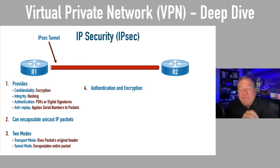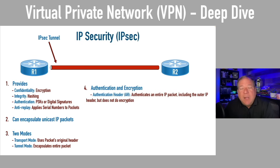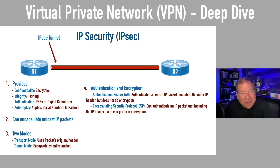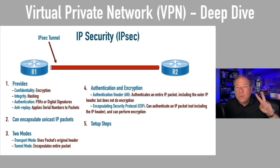IPsec doesn't have to do encryption — it could just be used for authentication. The Authentication Header option authenticates the entire IP packet including the outer IP header but does not do encryption. The encryption option is called ESP — Encapsulating Security Payload — which is what we'll be using in our demo. ESP authenticates the IP packet but not the IP header, and importantly it does encryption. I probably want to encrypt my traffic, so we're going to use those options.